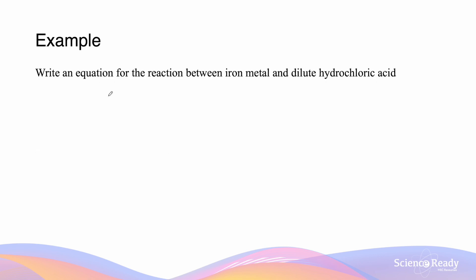Our example asks us to write the equation for the reaction between iron metal and dilute hydrochloric acid. Iron metal reacts with hydrochloric acid as a transition metal to form a salt and hydrogen gas, albeit more slowly because it is less reactive.